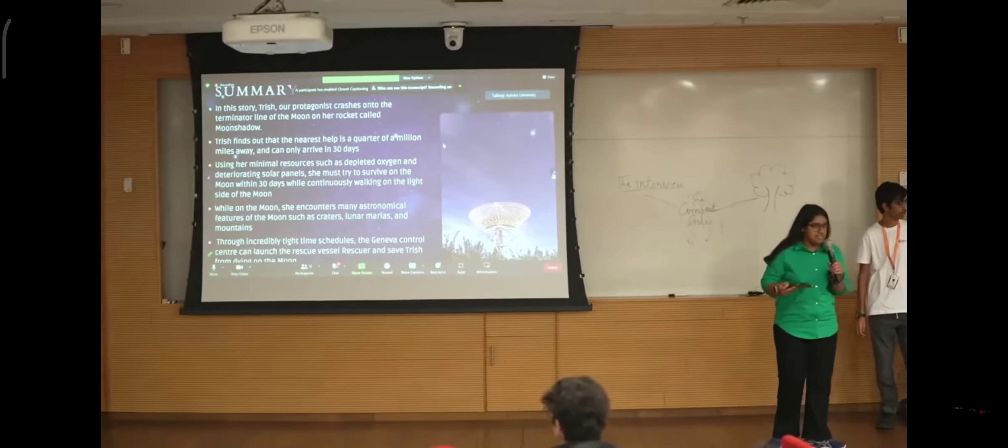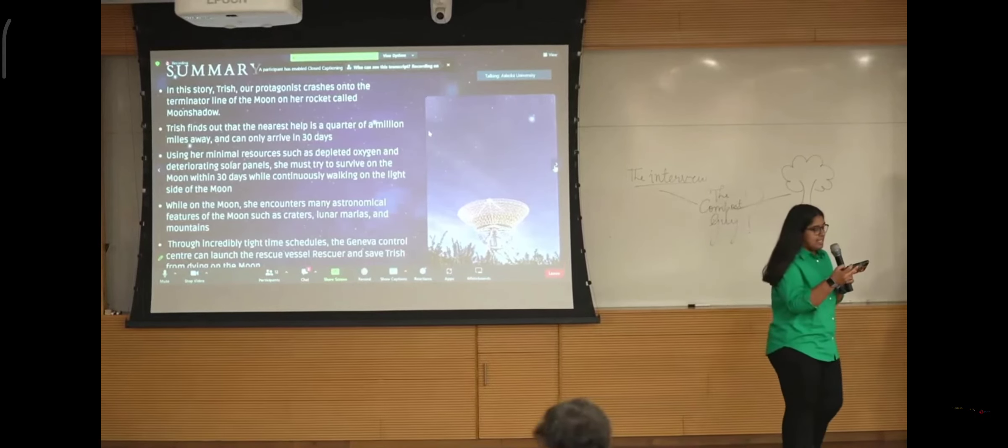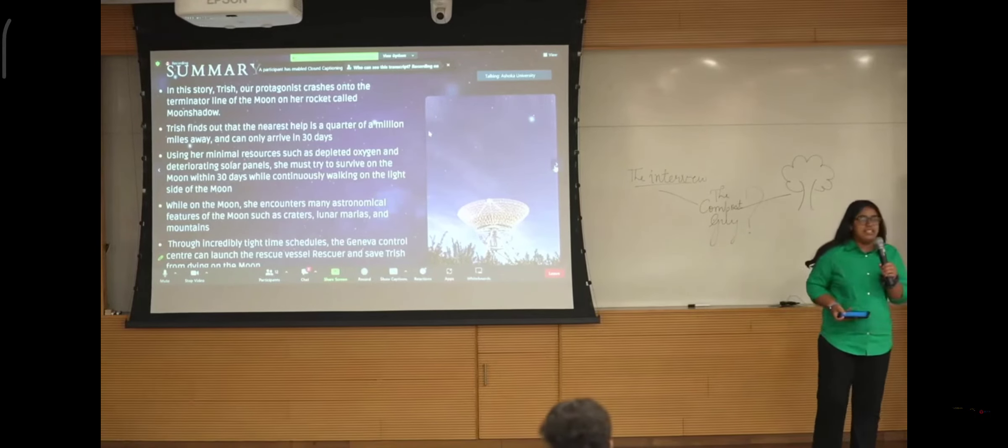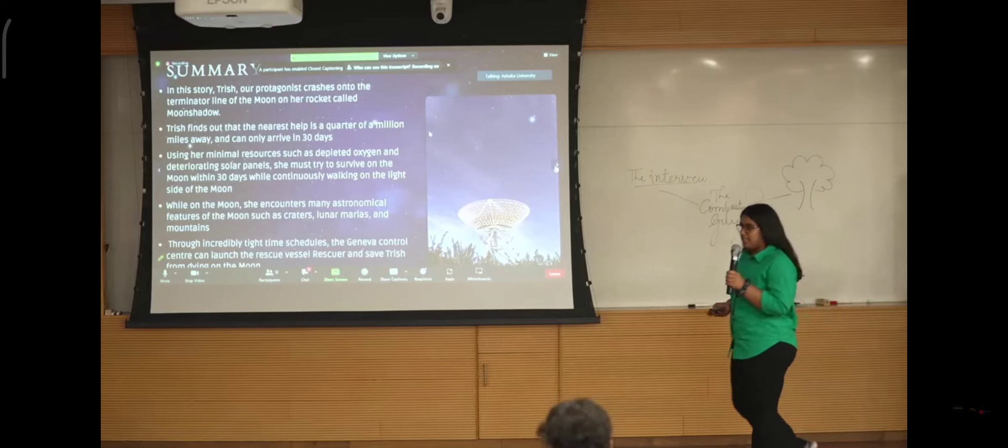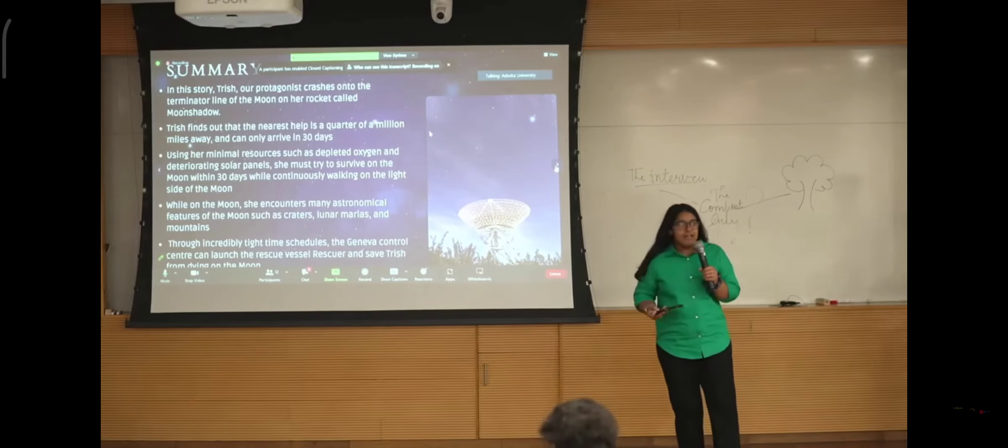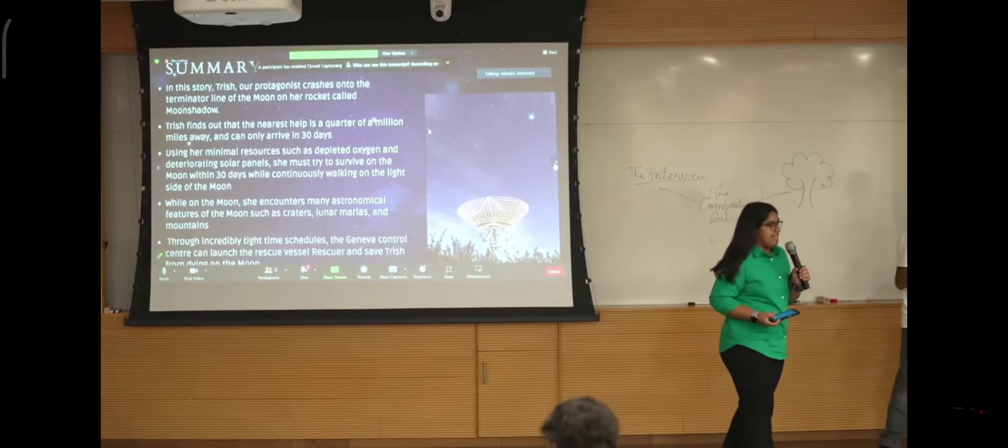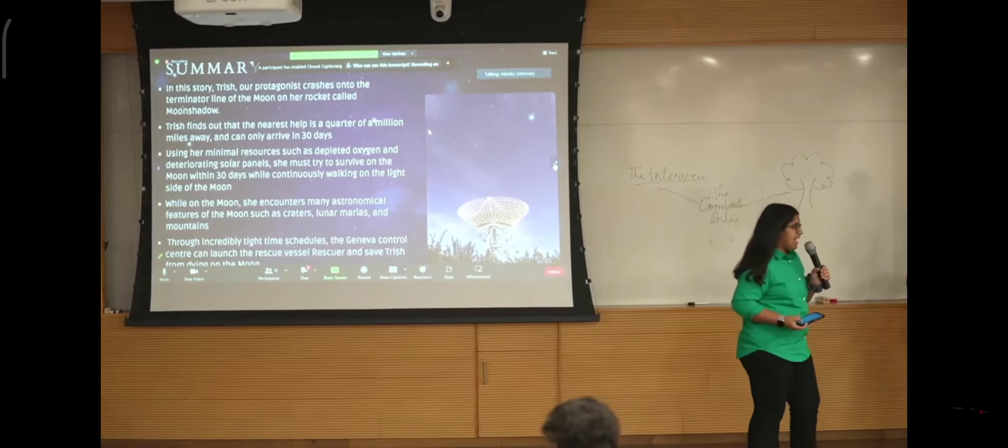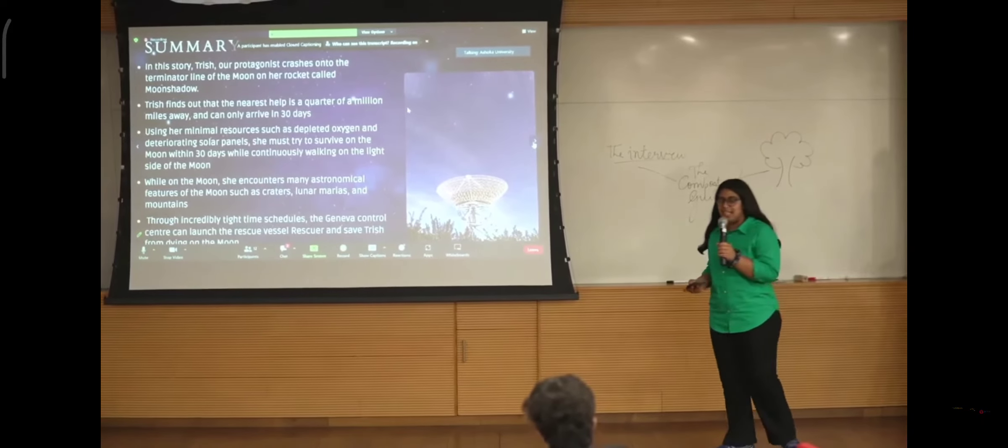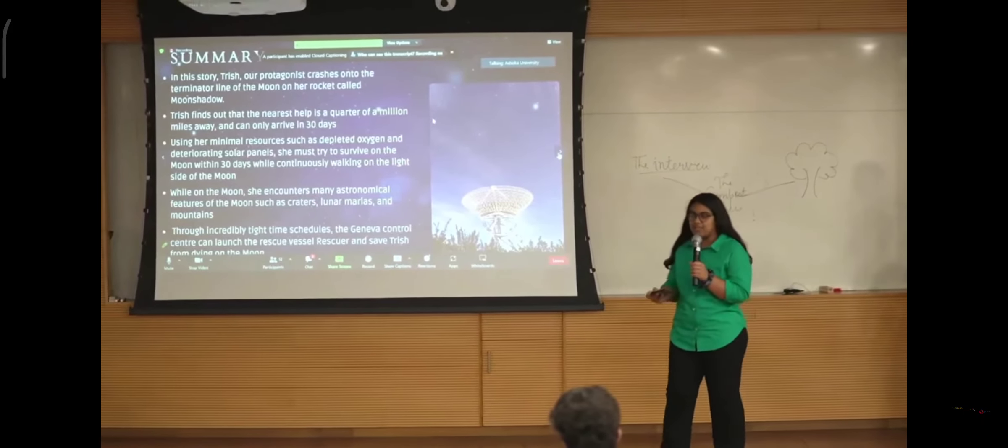To stay alive Trish has to keep walking continually to stay in the sunlight. Whilst on her journey she passes wonders of the moon unseen to any other before her. While she walks she has to maintain her suit, sleep, rations and ensure that she is moving at a fast pace. Due to exhaustion and loneliness she starts hallucinating that her elder sister Karen is there with her who died a few years earlier.